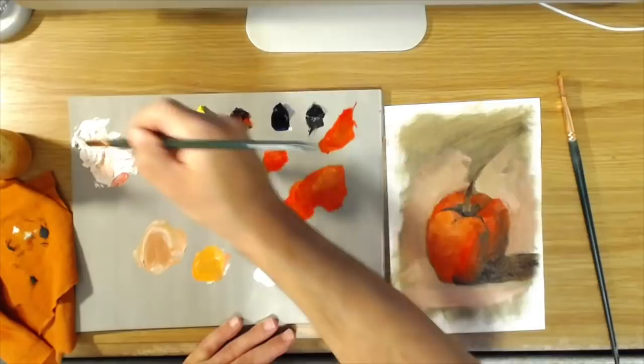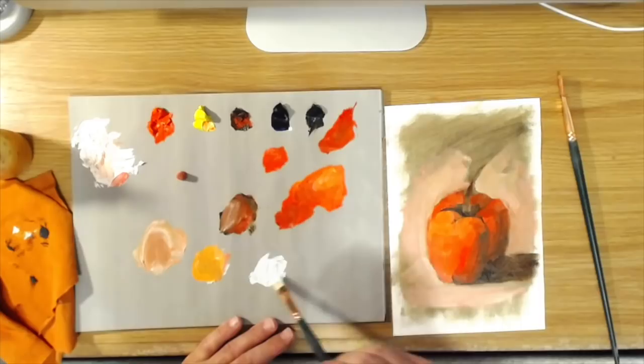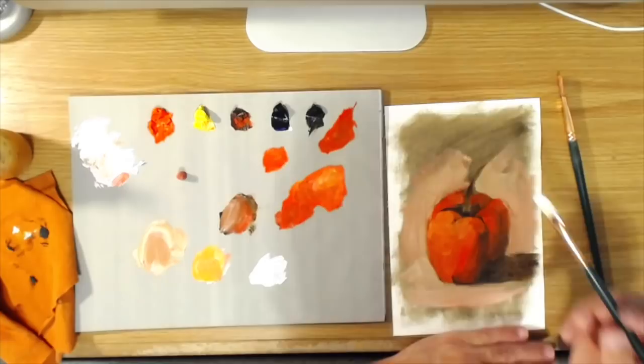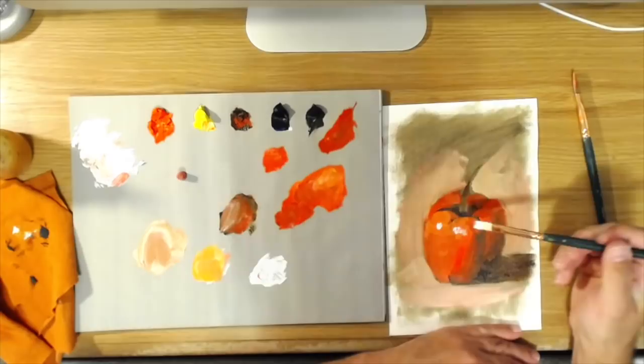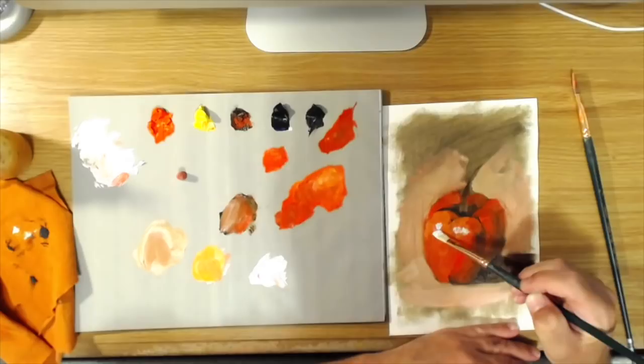not too much—you still want it to be mostly white. But if you do that, you'll kind of make the highlight look a little more natural. So it's here, and then here, and you can sort of blend that in a little around it.